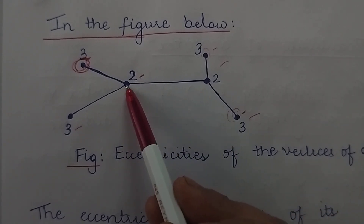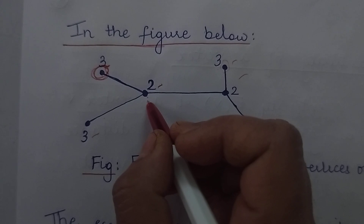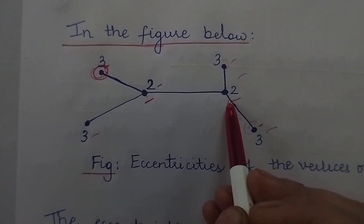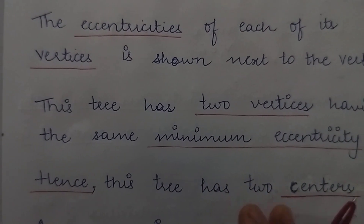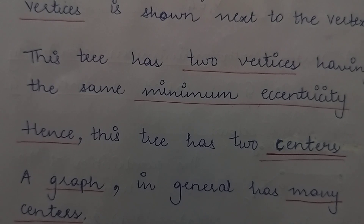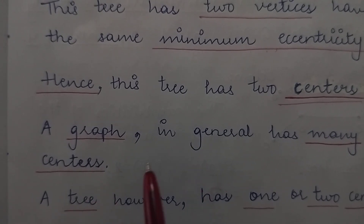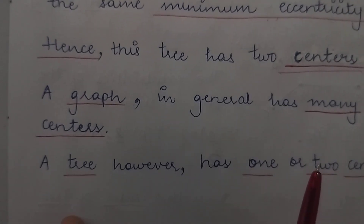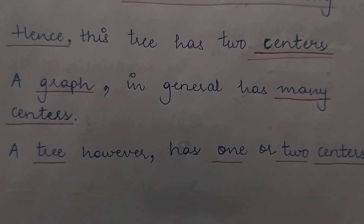The minimum eccentricity we have is 2, which belongs to 2 vertices in this case. So since this tree has 2 vertices with the same minimum eccentricity, this tree has 2 centers. A tree will have either 1 or 2 centers. A graph in general may have many centers because there is a possibility of finding more than one available path between any 2 pair of vertices in a graph. But a tree however has either 1 or 2 centers. This is how you can find out the center of a tree.